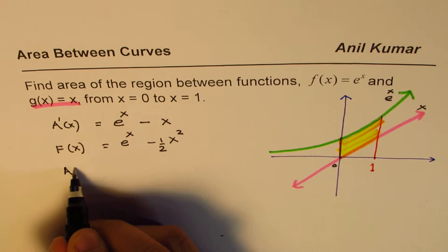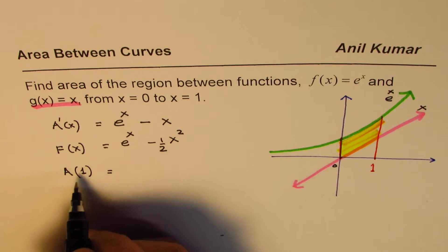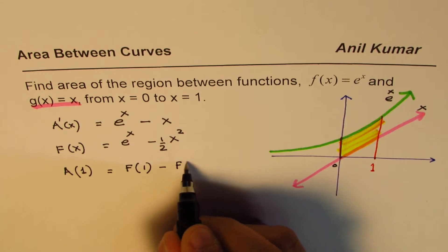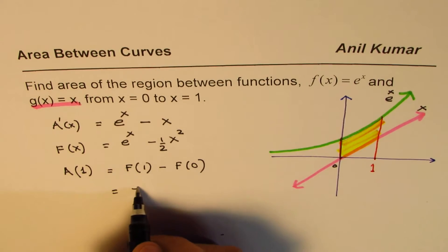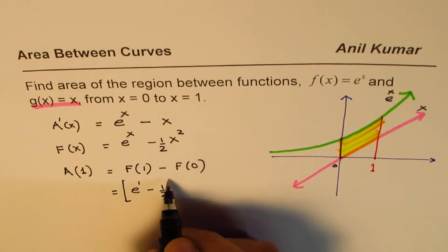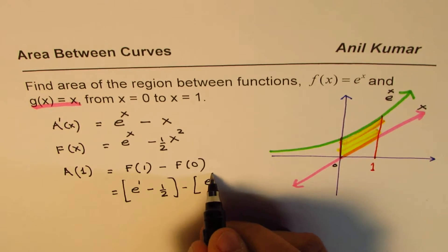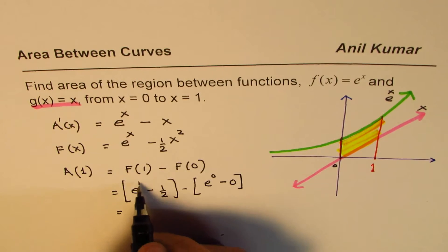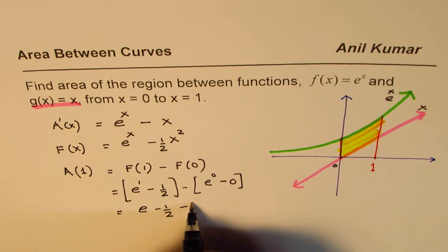Now the area will be from 0 to 1, the area is going to be F of 1 take away F of 0. So F of 1 is, let's substitute 1 here, e to the power of 1 minus half. This is F of 1, take away F of 0, which is e to the power of 0 minus 0.